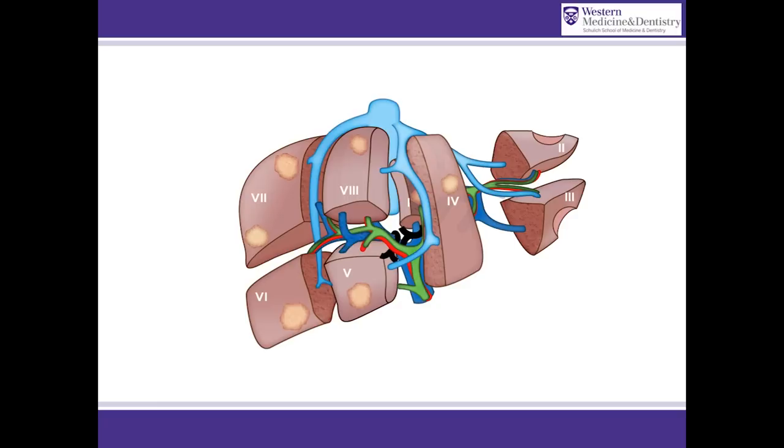This allows it to behave as an auxiliary liver during the one-week interval, thus maintaining synthetic function and avoiding liver failure while the left lateral segment hypertrophies.